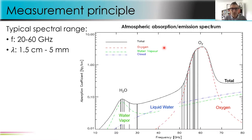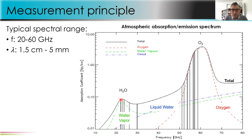The typical spectral range used by these instruments is between 20 and 60 gigahertz, because in this range we have a feature of water vapor — a line absorption of the water vapor. Here you are looking at a plot of the absorption of the atmosphere. This line is a water vapor line absorption, and then you have a large absorption complex by oxygen, and also absorption by liquid water. The total is the black line. Usually the microwave radiometer channels are located on the wings of these two features — water vapor channels, liquid water channels, as well as temperature channels on the oxygen band.